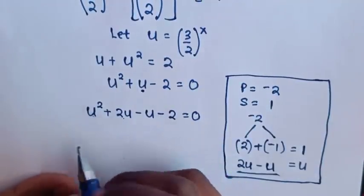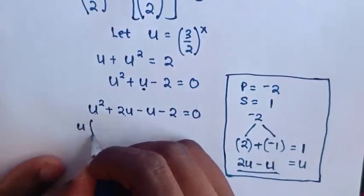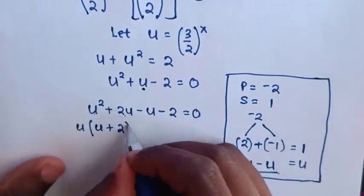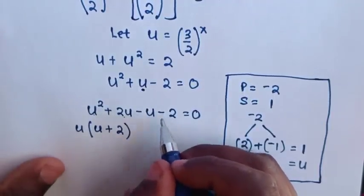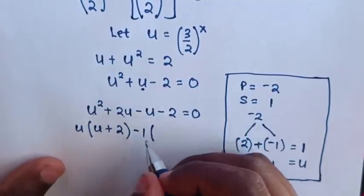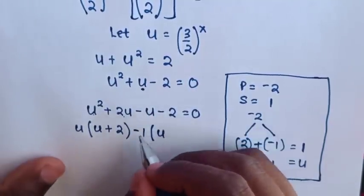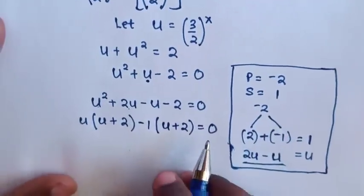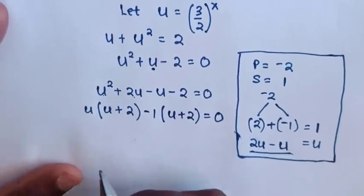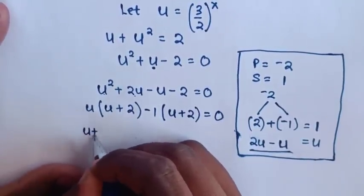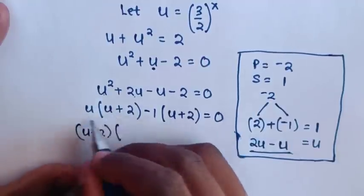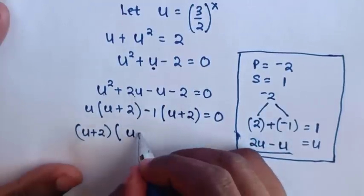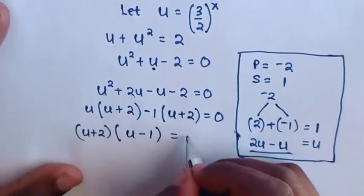We factor by grouping. From the first two terms, u is common, giving u bracket u plus 2. From the last two terms, negative 1 is common, giving negative 1 bracket u plus 2. So u plus 2 is common, and we factor it out: bracket u plus 2 bracket u minus 1 is equal to 0.